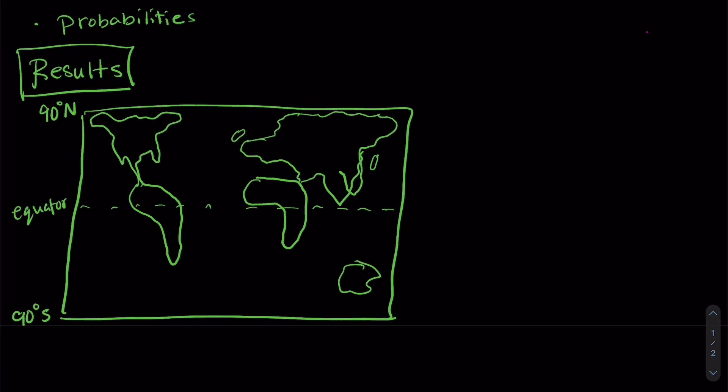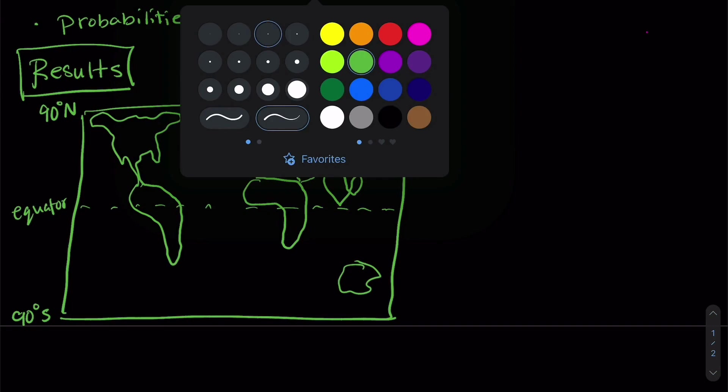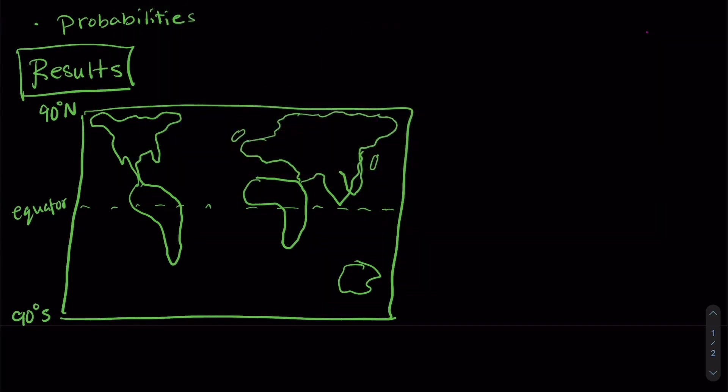So they found a couple of really important things. First off, what they found was that there was increased turbulence at what we call the mid latitudes. And mid latitudes are anywhere between 30 degrees and 60 degrees. So kind of in this range right here. So we have an increase in turbulence there, an increase in the probability that you would encounter turbulence.